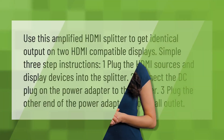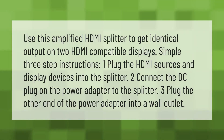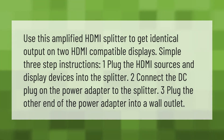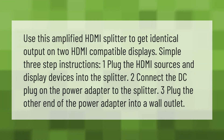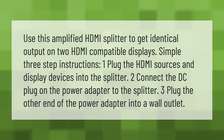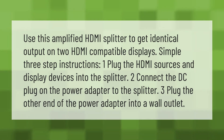Use this amplified HDMI splitter to get identical output on two HDMI-compatible displays. Simple three-step instructions: one, plug the HDMI sources and display devices into the splitter; two, connect the DC plug on the power adapter to the splitter; three, plug the other end of the power adapter into a wall outlet.